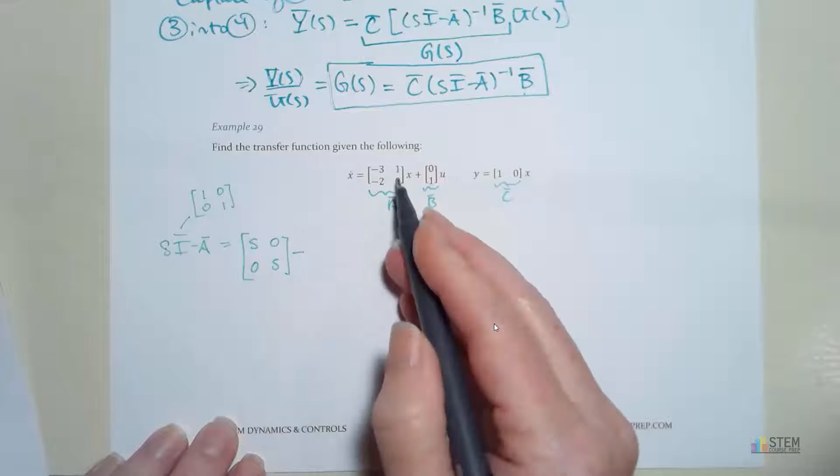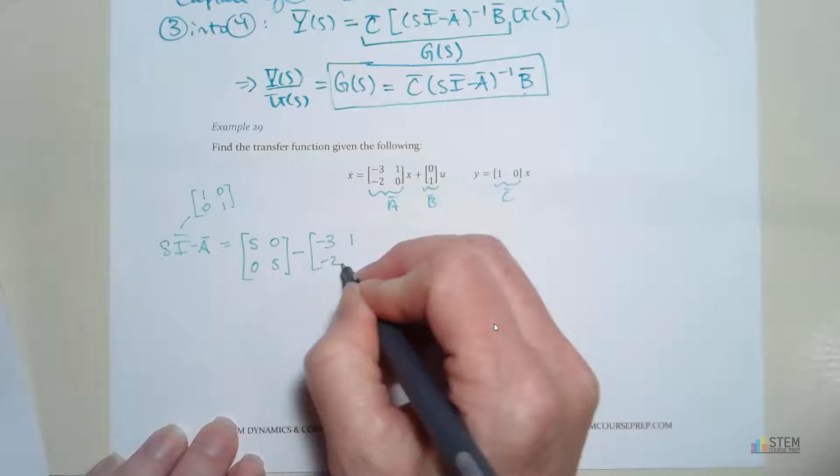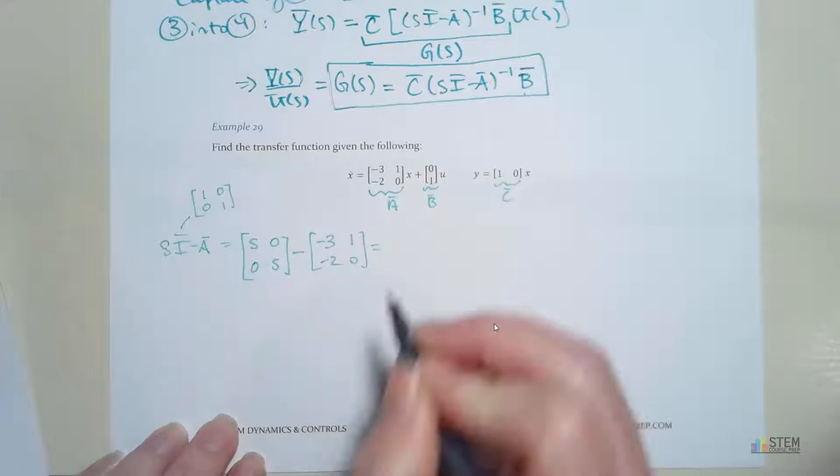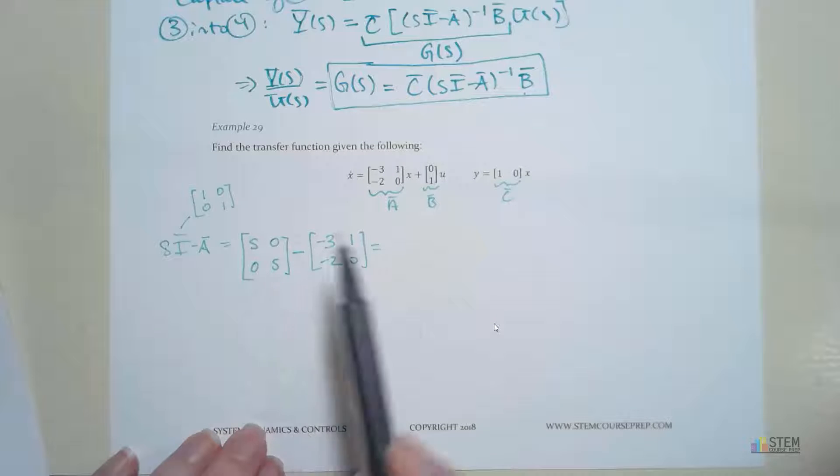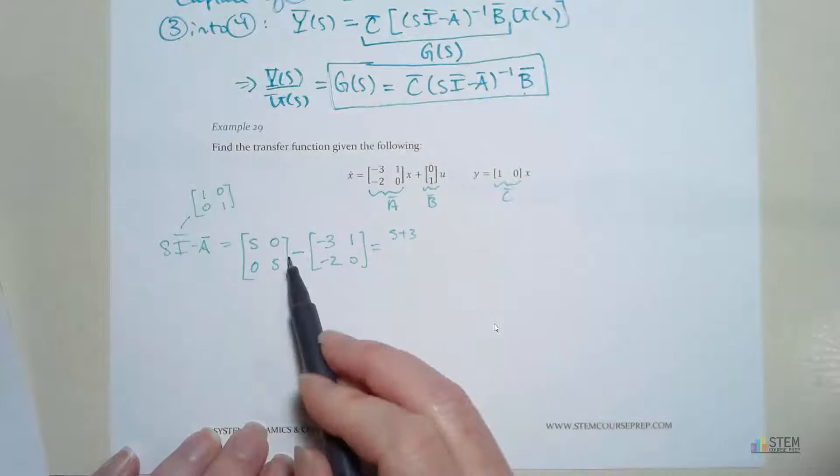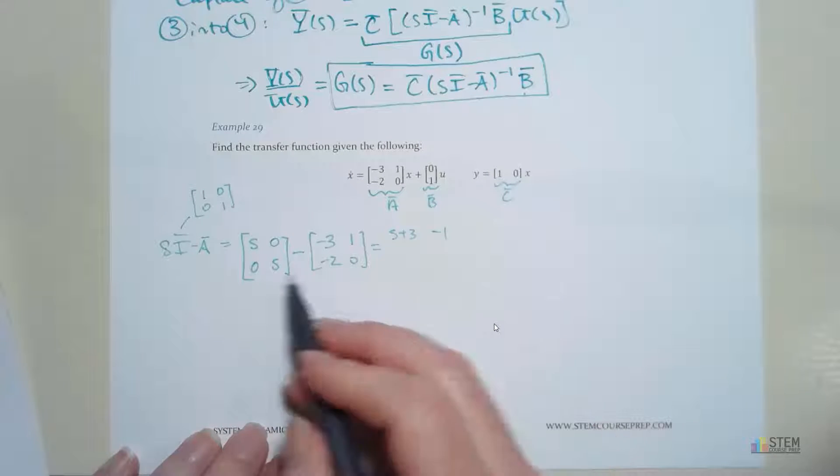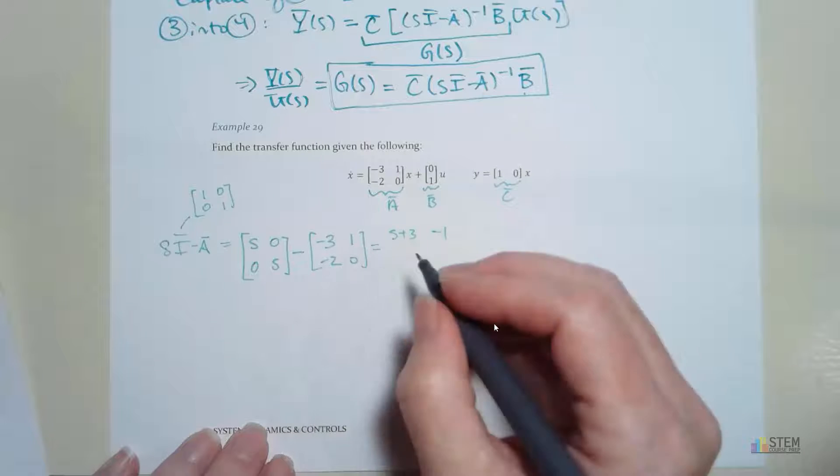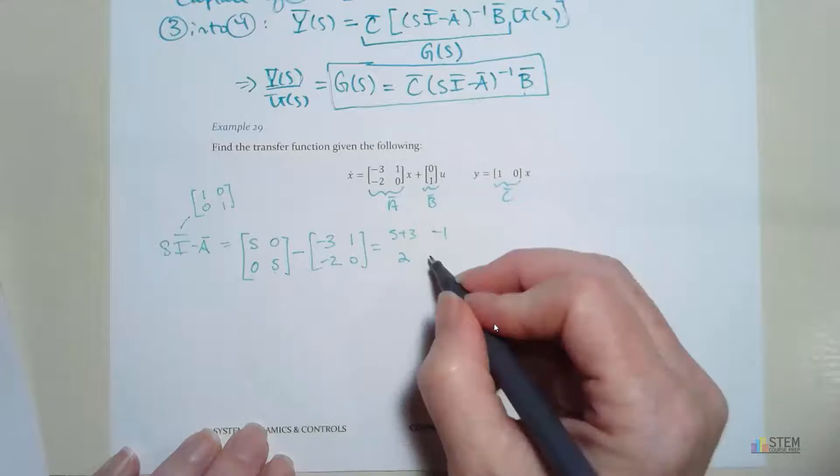And then subtract A. So [-3, 1; -2, 0]. Let's see what we have. We have s minus negative 3, that gives us s plus 3. 0 minus 1 is negative 1. 0 minus negative 2 gives us positive 2. And then s minus 0 is just s.